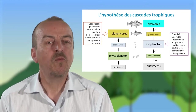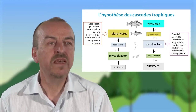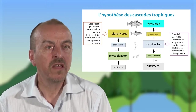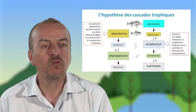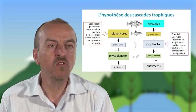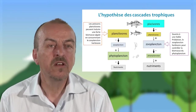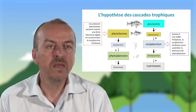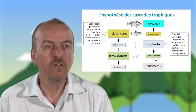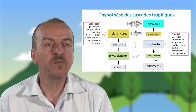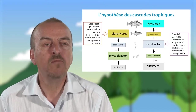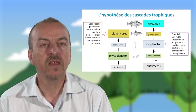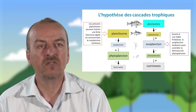Si on reprend la figure de gauche, au sommet vous avez des poissons planctivores qui peuvent se développer — ils n'ont pas de prédateurs — et ils vont contrôler en retour le zooplankton et le maintenir à un niveau minimal dans l'écosystème. Ce zooplankton étant maintenu à un niveau assez faible, aura assez peu la possibilité de contrôler le phytoplankton, qui va pouvoir se développer de manière importante s'il y a beaucoup d'apports en nutriments, comme le phosphore dans les lacs.